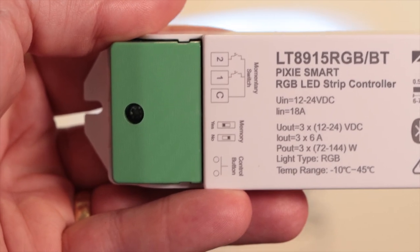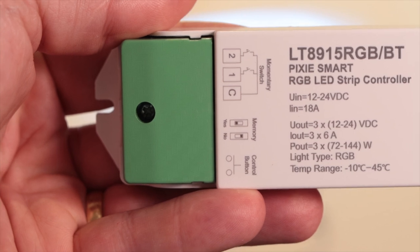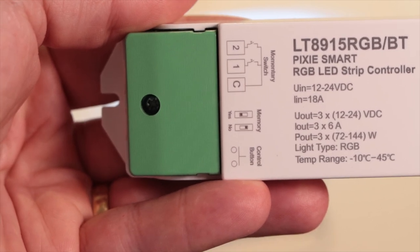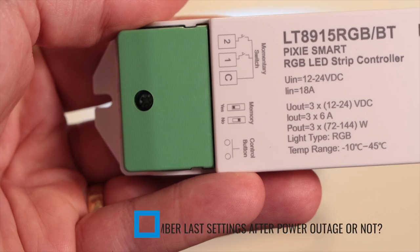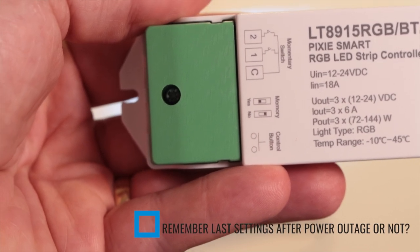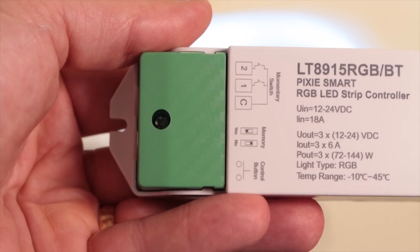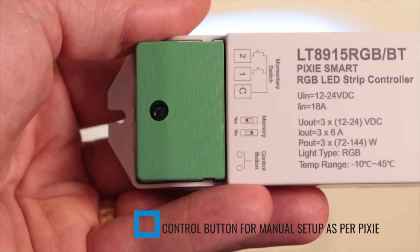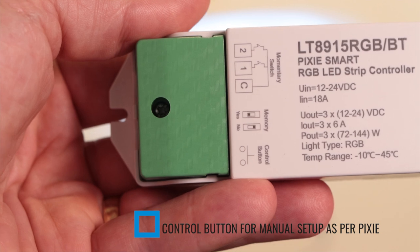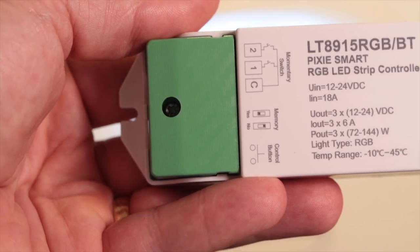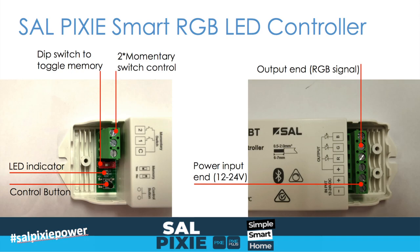Below that we've got a memory switch functionality such that if a power outage occurs it will either not or will remember the level it was at. And then we've got a control button there so that when you've installed it you can actually test everything and even bind things just manually with the Pixie system.